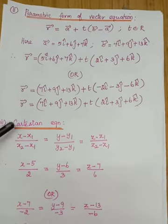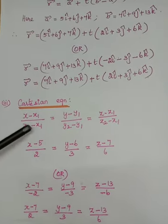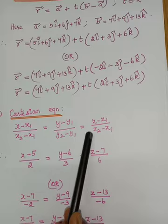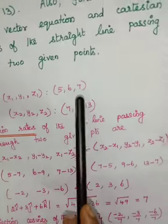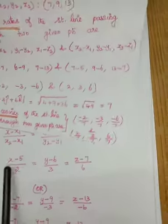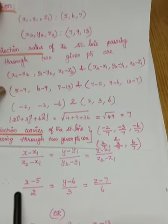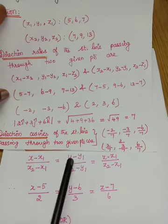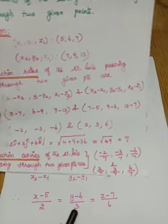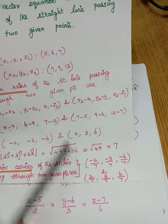What is the third part asked? The Cartesian equation of the straight line passing through two given points. The formula is: (x minus x1)/(x2 minus x1) = (y minus y1)/(y2 minus y1) = (z minus z1)/(z2 minus z1). Considering (5,6,7) as the first point and (7,9,13) as the second, substituting gives: (x minus 5)/2 = (y minus 6)/3 = (z minus 7)/6.